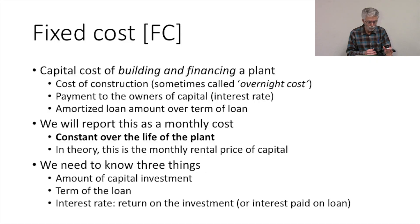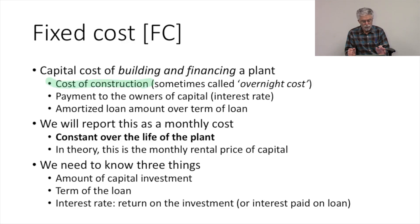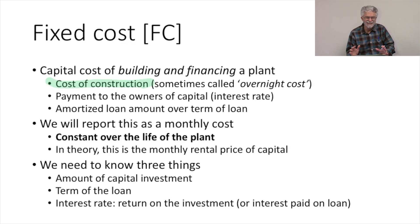Let's start with fixed costs. In order to use a power plant, you have to build it first. So we have the capital cost of building and financing a plant — the cost of construction, which we often call the overnight cost. I don't know of any power plants we can build overnight, but this is just one way we talk about the capital cost of constructing a plant: what do we have to pay to get the plant built and on the ground?